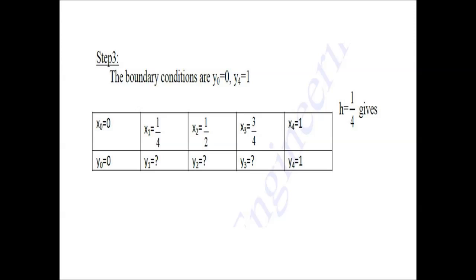Step 3: Find how many y_i values there are. To do this, you need your boundary conditions. The boundary conditions are y0 = 0 and y4 = 1. I found y4 by using the interval h. As shown in the table, starting from x0 and ending at x4 using h, the values y1, y2, and y3 are the unknowns we need to find. So our i values are 1, 2, and 3, which we will use in the next step.